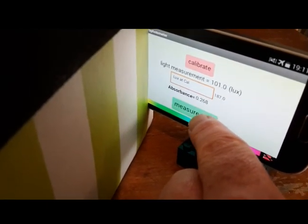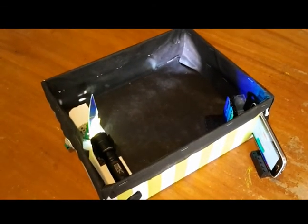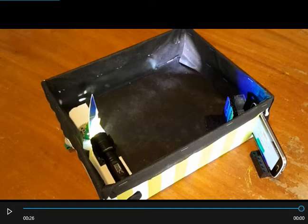You press measure absorbance on this app and it calculates the absorbance. This app is free on the Google Play Store. It's an Android thing and it's quite simple to make and would be a good part of another project to make your own app. I used MIT App Inventor. It's a block-based system, so it's dead simple to use because I'm not really a coder.